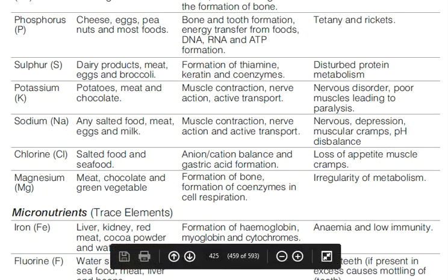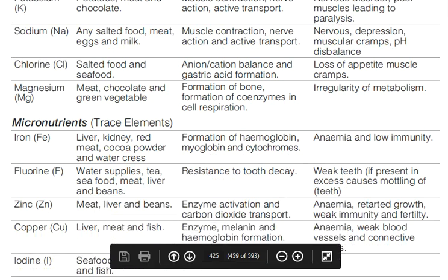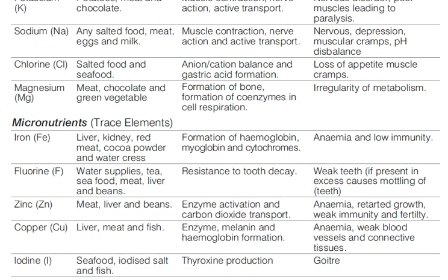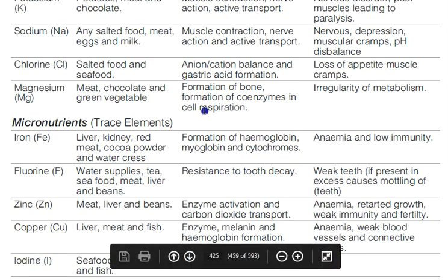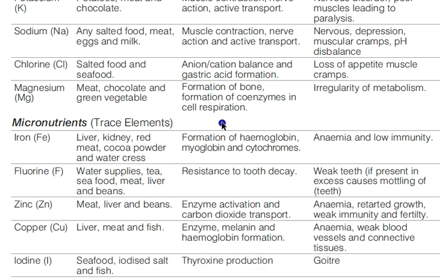Magnesium is found in meat, chocolate, and green vegetables. It is important for bone formation and coenzyme formation in cell respiration. All coenzymes involved in cell respiration require magnesium. Deficiency causes irregularity of metabolism.